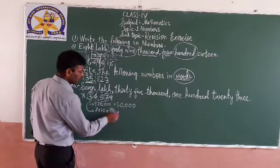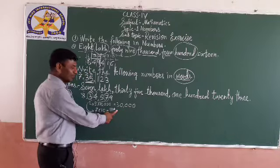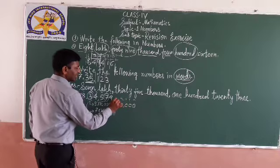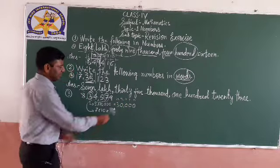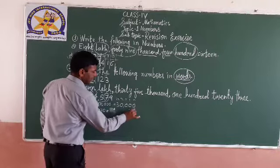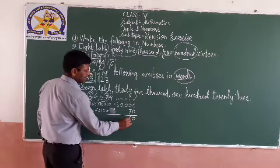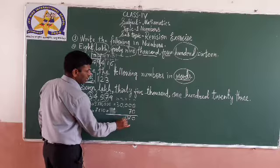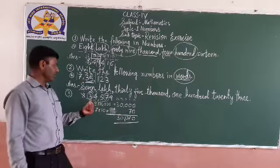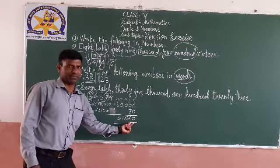So add these two. 70 is a two-digit number, so ones and tens place. Then add: 0 plus 0 is 0, 0 plus 7 is 7, then 0, 0, 3. So the sum of the place values of 3 and 7 is 30,070.